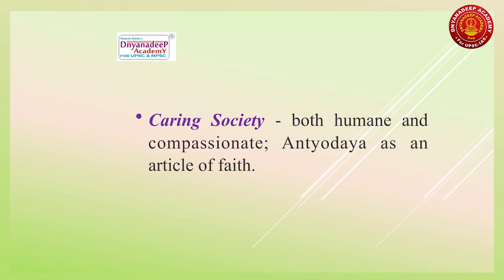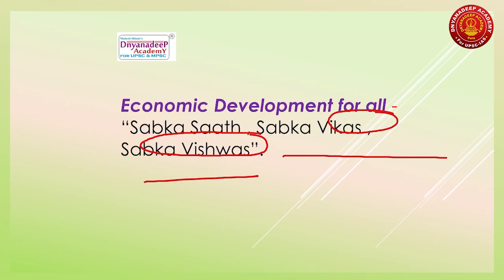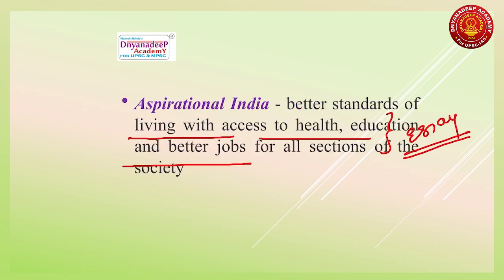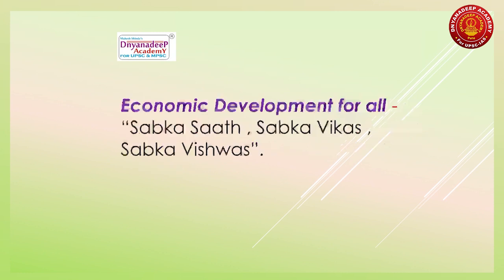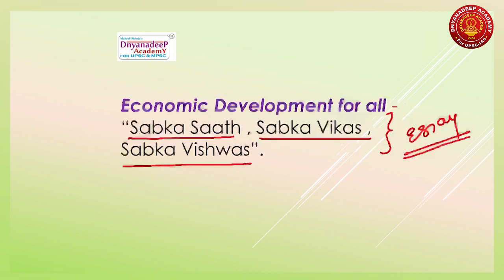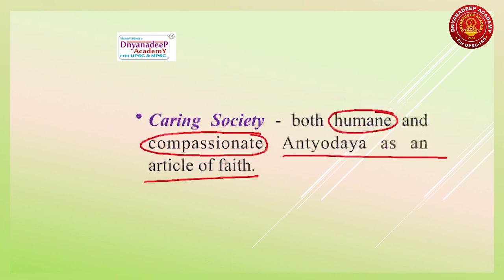The third theme is Caring Society, which talks about a humane and compassionate approach of government towards every citizen of India. Caring Society focuses on Antyodaya as an article of faith. So remember the three themes: first, Aspirational India; second, Economic Development for All; and third, Caring Society.